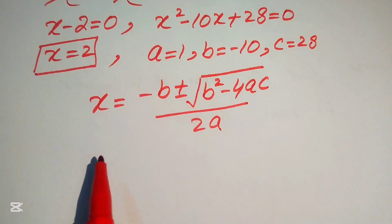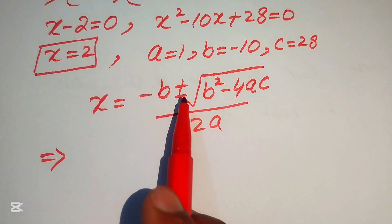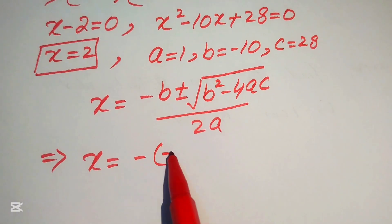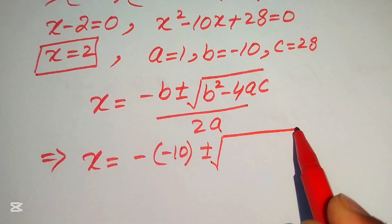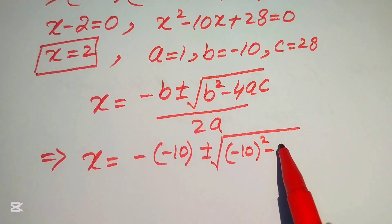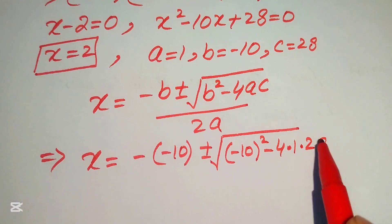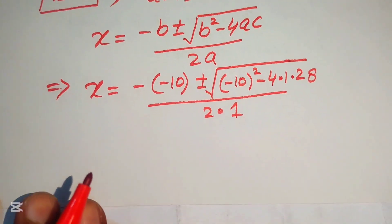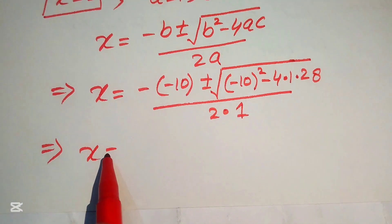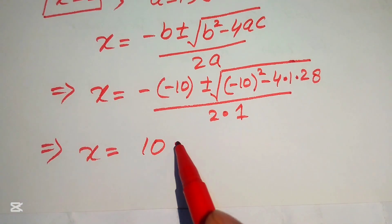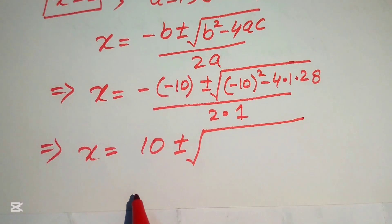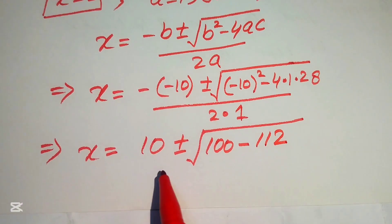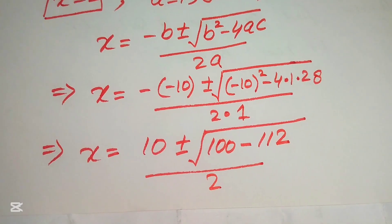The coefficients are a = 1, b = -10, and c = 28. Substituting into the quadratic formula: x = (-(-10) ± √((-10)² - 4(1)(28))) / (2·1) = (10 ± √(100 - 112)) / 2.